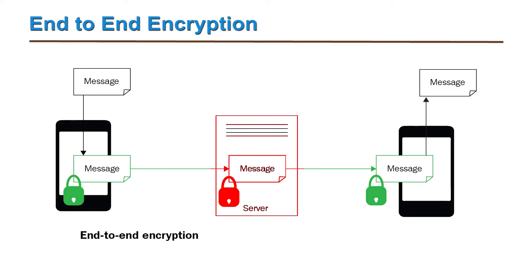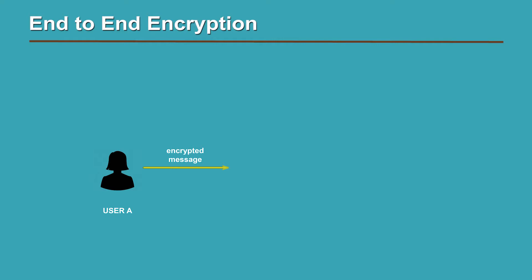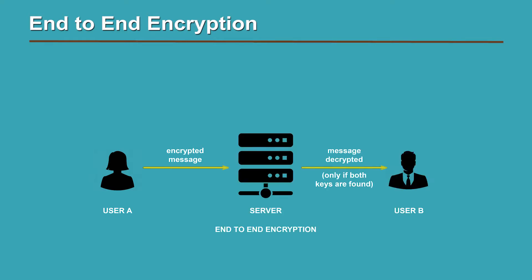These encryptions take place when the user composes and sends the messages to the receiver. They reach the receiver in the same encrypted form only. This encrypted email can only be decrypted with the help of the user's private key.